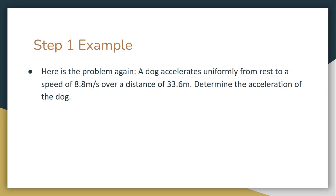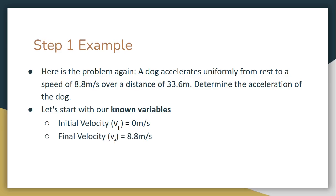So now let's do this. Just for reference, here's the problem again. So what do we know? We know the initial velocity is zero because it says from rest, so we assume it starts from zero. We know the final velocity is 8.8 because it says from rest to a speed of 8.8.